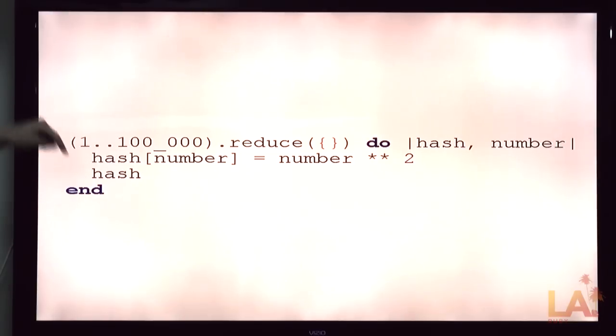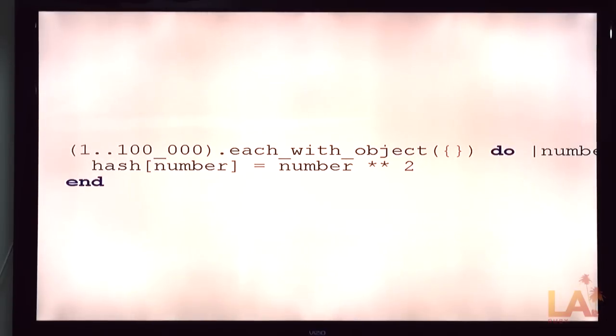So obviously we'll pass the hash in. We'll get hash as the arguments. Square it. Set the, right? And return the hash so it can go into the next time. What's hidden here is each time you finish this block we create a new hash and send it in. So if you do this the garbage collection will eat you like you would be bad for everything.